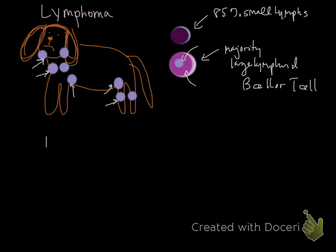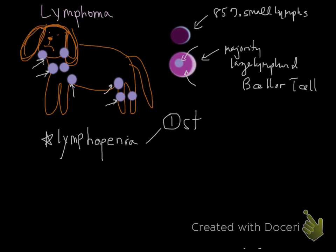Most animals with lymphoma have a lymphopenia, and there are two reasons for this. One is stress — this is a stressful systemic neoplasm. The other reason is that the lymph nodes may not allow normal lymphocyte trafficking, so lymphocytes get trapped within the lymph nodes, or the thoracic duct and various lymphoid structures are clogged with neoplastic lymphoid cells.